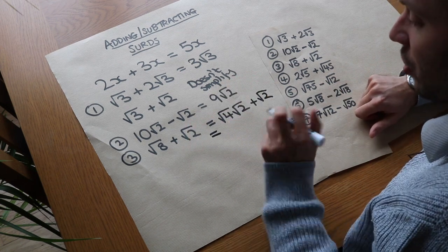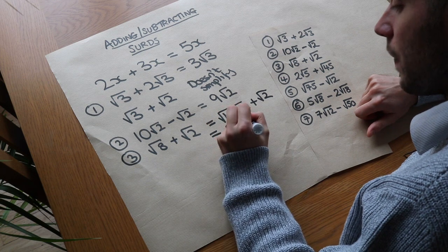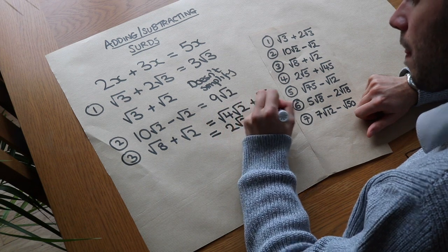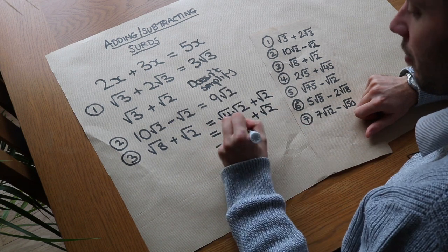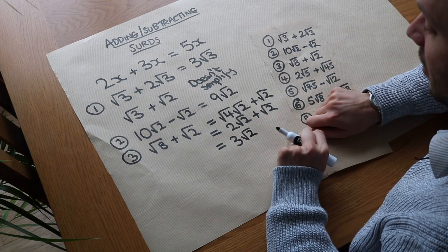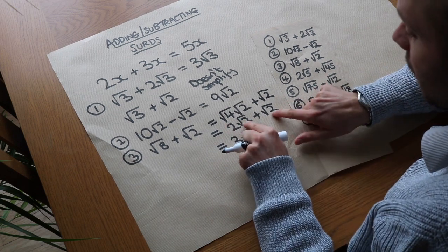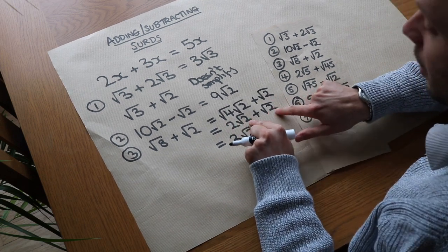Now the square root of 4 is 2, so we've got 2 root 2 plus root 2. And if we've got 2 lots of root 2 plus 1 lot of root 2, that's 3 lots of root 2. We can collect these together now. We're collecting like terms effectively because the number under the square root is the same.